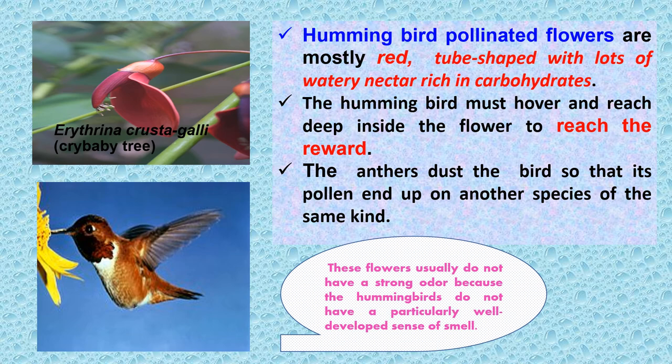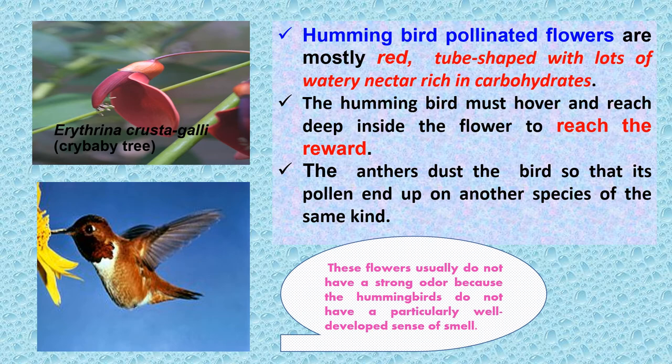Hummingbird-pollinated flowers are mostly red and tube-shaped with lots of watery nectar rich in carbohydrates. The hummingbird must hover and reach deep inside the flower to access the reward. The anthers dust the bird so that pollen ends up on another flower of the same species. These flowers, like Erythrina crista-galli (the crybaby tree), usually do not have a strong odor because hummingbirds do not have a particularly well-developed sense of smell.